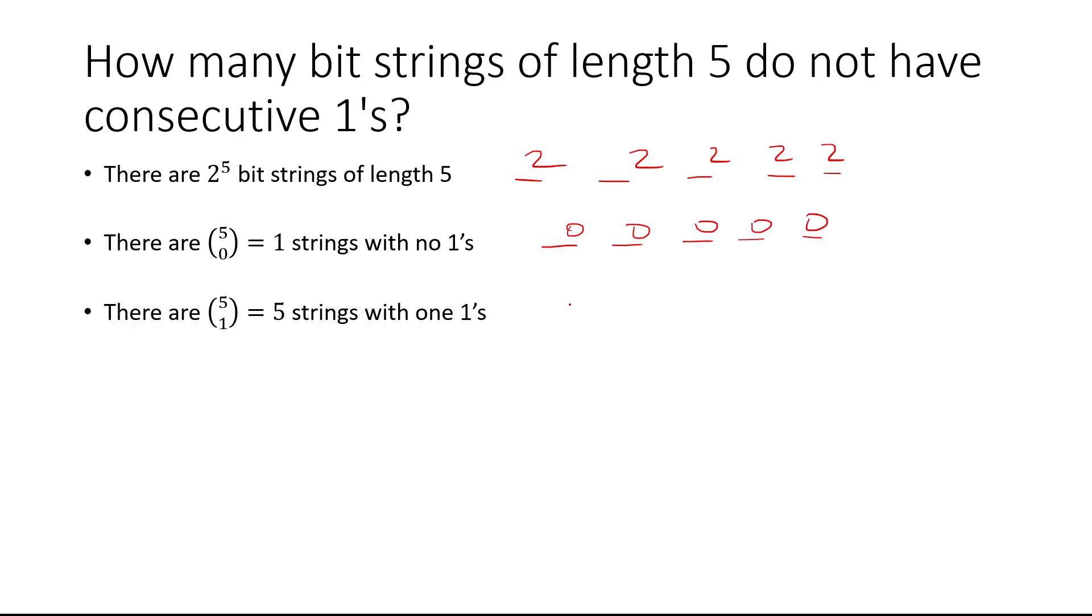And now if we put one 1, there are 5 spots where you could put the 1 and the rest will be 0. So for example, it could be like this.